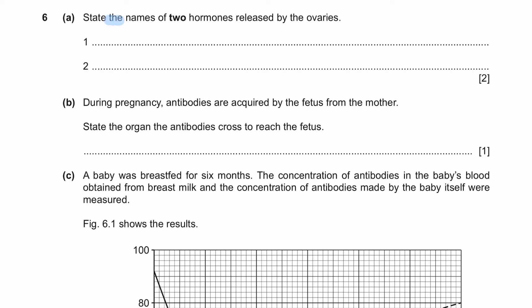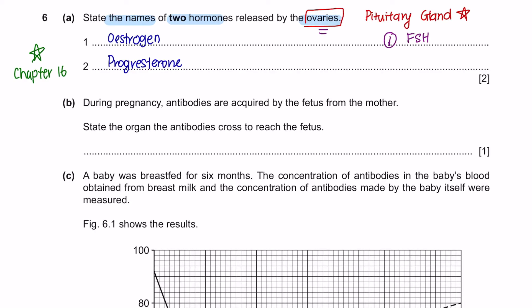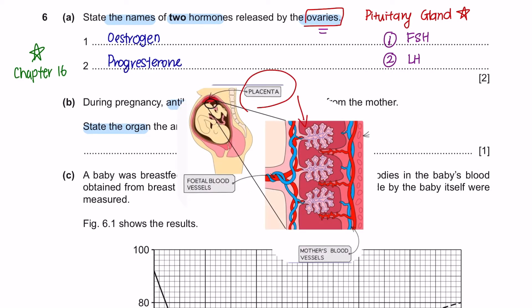Question 6 Part A, state the names of the two hormones released by the ovaries. You will learn about the hormones of the menstrual cycle in Chapter 16. The hormones released by the ovaries are estrogen and progesterone. Pay attention that these are hormones released by the ovaries. If you are asked for hormones released by the pituitary gland, that would be follicle stimulating hormone and luteinizing hormone. Next, question B. During pregnancy, antibodies are acquired by the fetus from the mother. State the organ the antibodies cross to reach the fetus. During pregnancy there are several substances that move across the mother into the fetus and from the fetus into the mother. All of this takes place in the placenta.